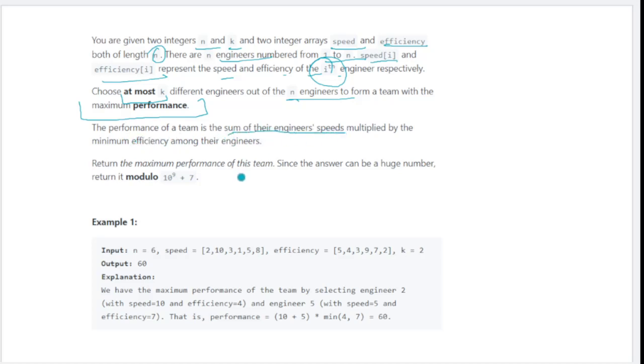The performance of a team is the sum of the engineers' speeds multiplied by the minimum efficiency of the engineers. Let's say we took only two engineers: speed is 5 and 7, efficiency is 3 and 4. So your performance in this case would be the sum of speeds (5 + 7 = 12) multiplied by the minimum efficiency, which is 3. So this is 36.